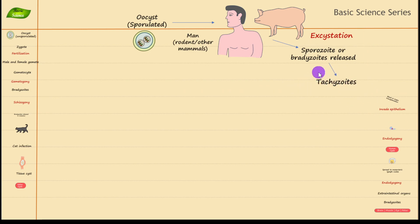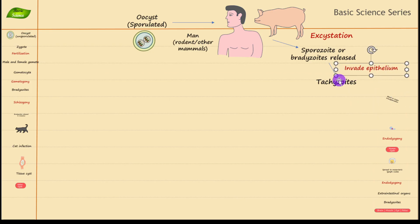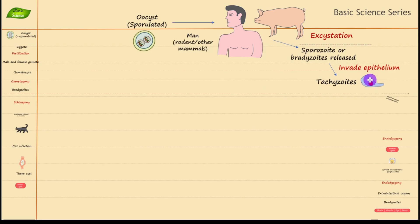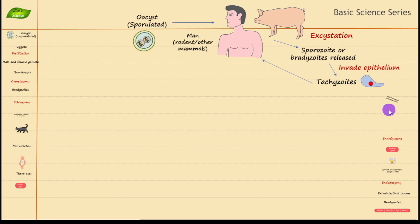The sporulated cyst releases the sporozoites and they get converted into tachyzoites. Invasion of the intestinal epithelium is the important point here — they invade the epithelium and then get converted into tachyzoites. Since tachyzoites are in the blood, they can re-infect humans through blood transfusion or organ transplantation.